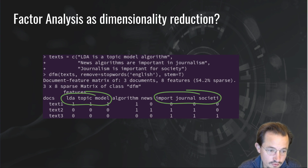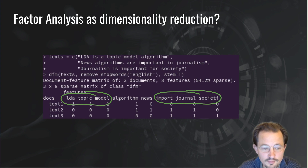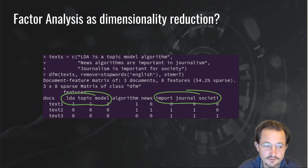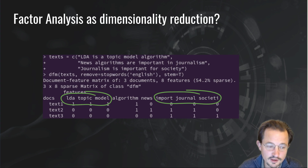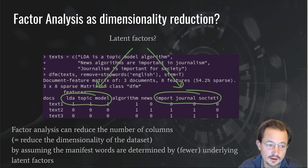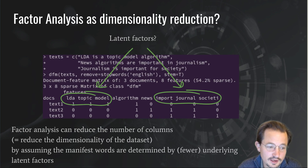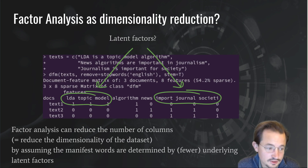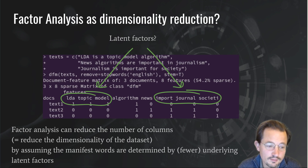Probably if you look at those, you'll see that there's one latent factor with LDA and topic modeling in them — the one that talks about topic modeling — and there might be a latent factor that talks about how journalism is important. If you know how well a document scores on those two latent factors, you might be able to explain most of the variation in the occurrence of the actual underlying words. So you can treat combinations of columns as a latent factor, and by doing a factor analysis you reduce the number of columns you need. Slightly more technically, you're reducing the dimensionality of the dataset, since you no longer need eight dimensions — maybe you only need your two latent factors.